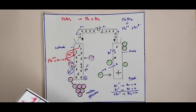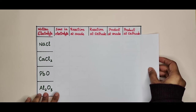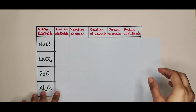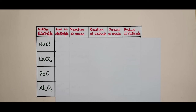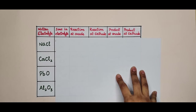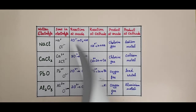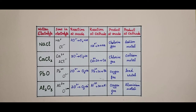You can practice using a table that lists: electrolyte, ions in electrolyte, reaction at anode, reaction at cathode, product at anode, and product at cathode. These are the molten electrolytes to answer respectively. Pause the video, solve it, then check your answers. These are the answers for all the molten electrolytes. I hope you have learned well — consistency is the key to success. Signing off, Miss Aisha Mansoor.